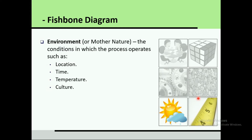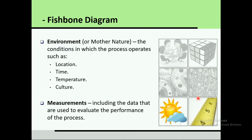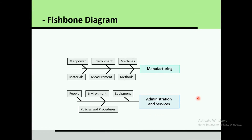Mother Nature, also called environment, refers to the conditions in which the process operates — such as location, time, temperature, and culture. For example, if one machine operates in a warm place and another in a cool place, there will be variability due to the environment. Measurement includes the data used to evaluate the performance of the process. If an operator does not know the measurement tools and procedures, there will be variability in the product.